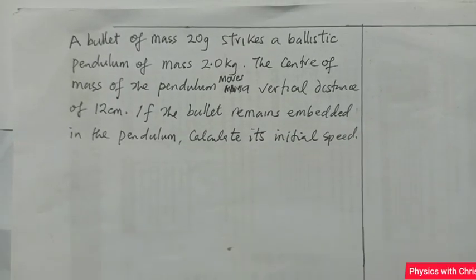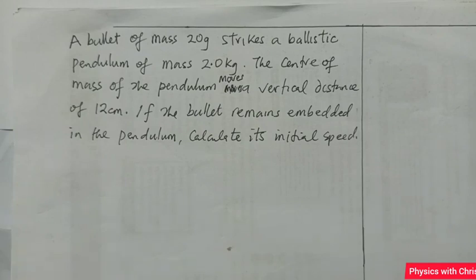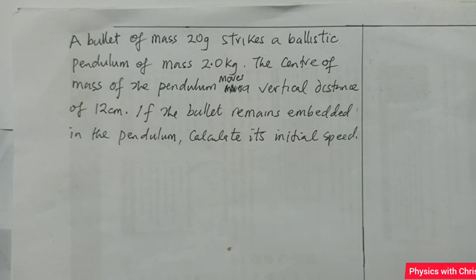I'm going to be solving this problem in this video. The question is taken from the dynamics of motion, and here we are going to apply the ideas of momentum conservation and the conservation of total energy. The question says a bullet of mass 20 grams strikes a ballistic pendulum — a device for measuring a bullet's momentum, from which it is possible to calculate the velocity and the kinetic energy of that bullet.